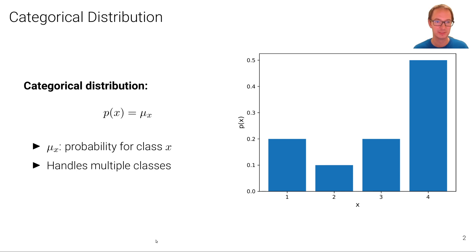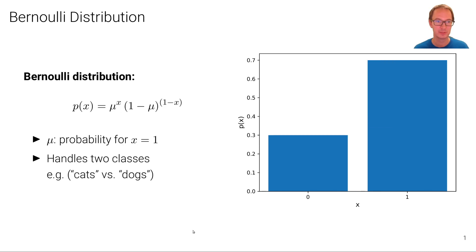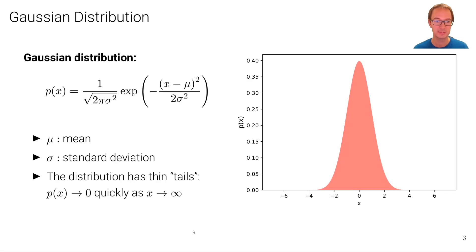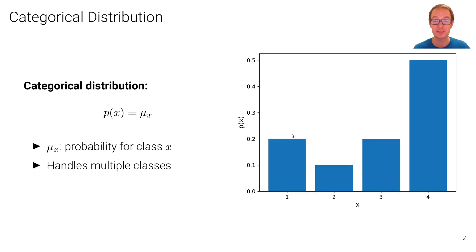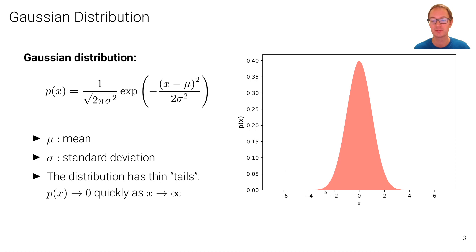So these are two examples of parametric discrete distributions. Let's now look at some common continuous distributions. Of course the most important one is the Gaussian distribution, which is mathematically expressed by this formula and visually looks like this here on the right. Where we have now not the probabilities, but the probability density function p of x visualized.